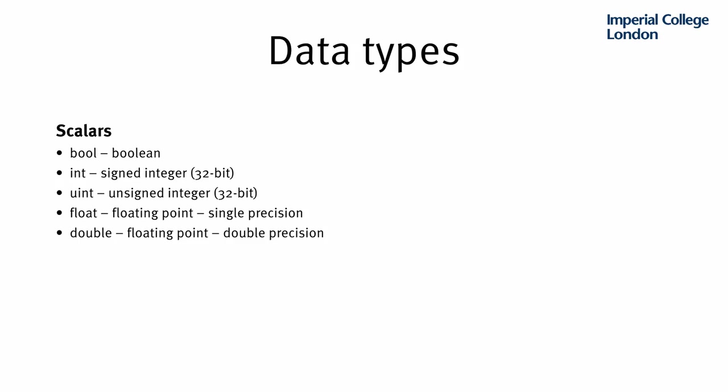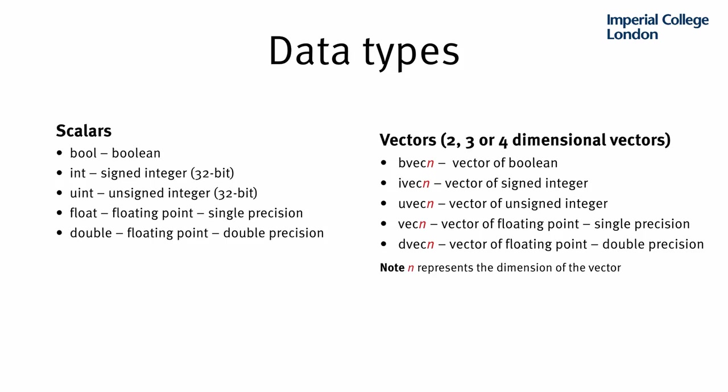OpenGL shading language supports standard scalar variables like boolean, integer, unsigned integer, floating point, and double. In addition, to support graphics processing and calculations, additional data types are defined in the shading language, like vectors. Vectors can be of any of the standard data types like boolean, integer, or double, and can be of two, three, or four dimensions. For example, vec3 represents a three-dimensional floating-point vector.